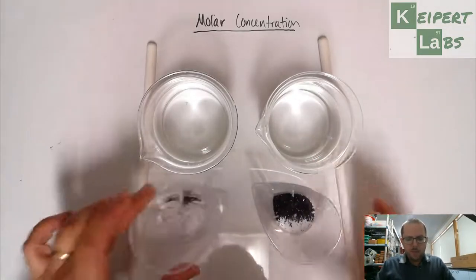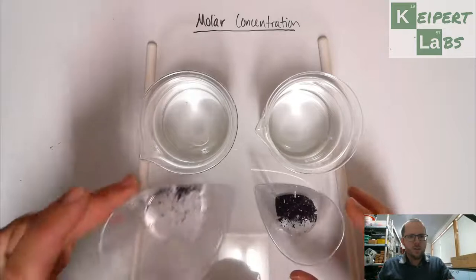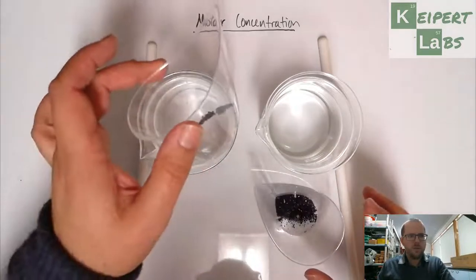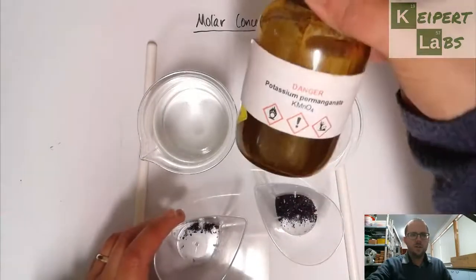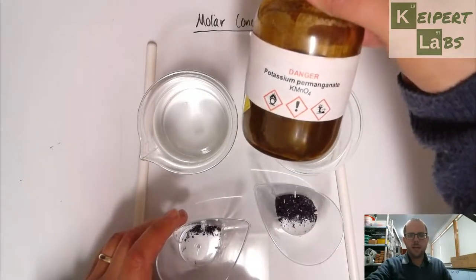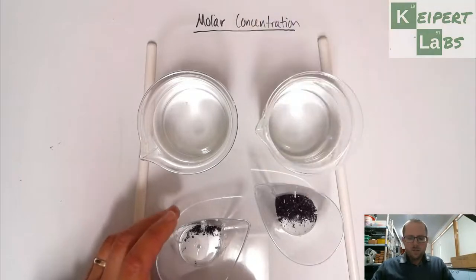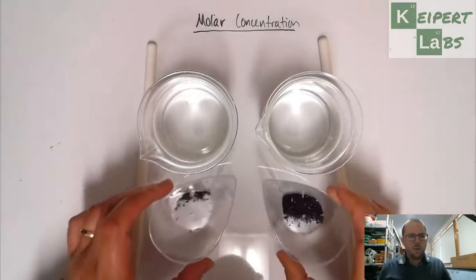Now, the substance that I've got inside, so this thing's called a weigh boat. It's a little plastic container, it's got some crystals inside. I have this stuff called potassium permanganate, KMnO4. So as you can see, I've got two little weigh boats.